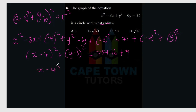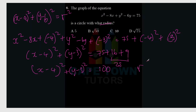Negative 4 squared is 16, so 75 plus 25 equals 100. Therefore r squared equals 100. To find r we take the square root: r equals 10. The answer is C. Hopefully you understand — let's move to the next question.